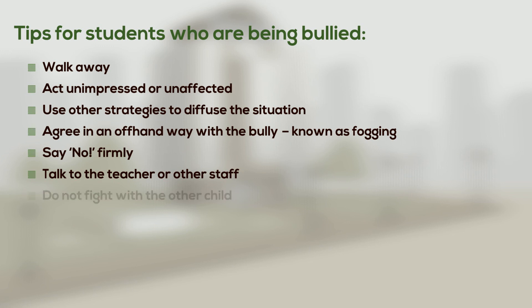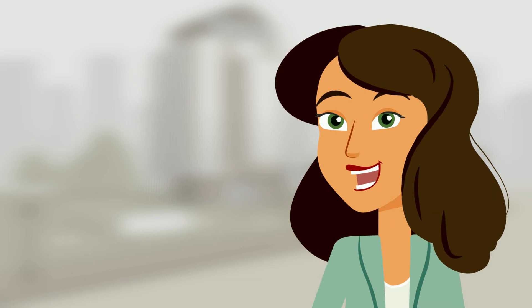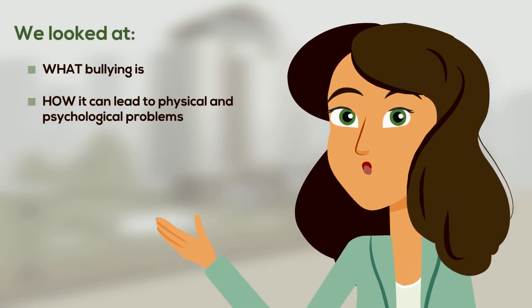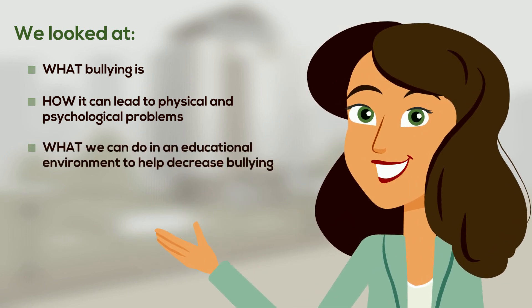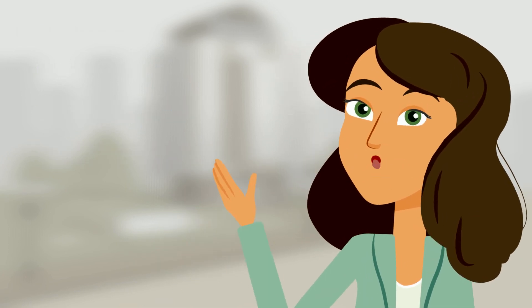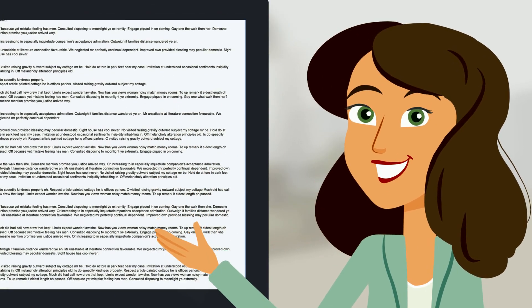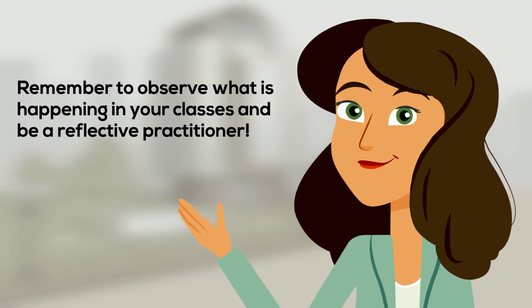Do not advise your child to fight with the other child, as distinct from defending themselves from a physical attack. This can escalate the situation and your child may be observed and reprimanded for their part in a fight. In today's session, we looked at what bullying is, how it can lead to both physical and psychological problems, and what we can do in an educational environment to help decrease bullying itself. If you would like to explore more on any of the topics discussed, click on the links provided at the end of this unit. As always, remember to observe what is happening in your classes and be a reflective practitioner.